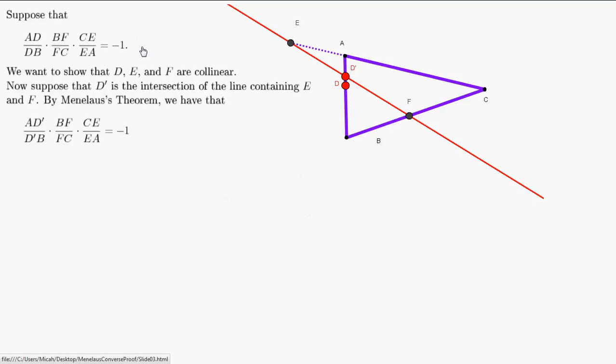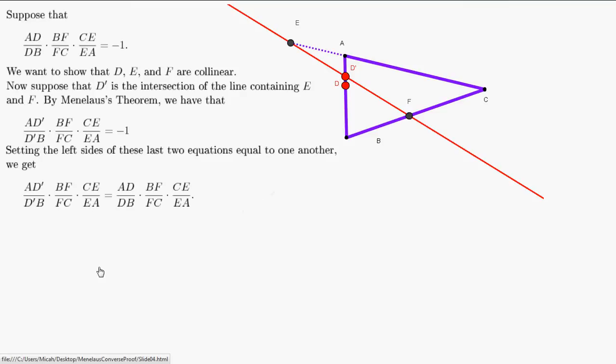Remember, we're also assuming the original product of ratios equals minus one. So these two sets of products must be equal. Setting them equal, we notice considerable overlap: BF/FC appears in both, and CE/EA appears in both. Regardless of whether these are positive or negative, they're exactly the same quantities, so we can cancel them out.